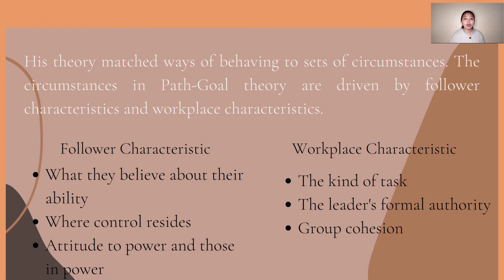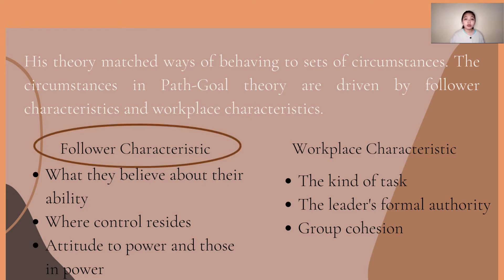The circumstances in Path-Goal theory are driven by two characteristics: the workplace characteristics and the followers' characteristics. For the followers' characteristics, it includes first, what they believe about their ability — do they feel they are capable of fulfilling the task well? Second, locus of work control — do group members believe they have control over the way they approach the task and the chances of achieving the goal, or do they see themselves as being controlled by other people and outside events? Lastly, the followers' attitude toward those in power.